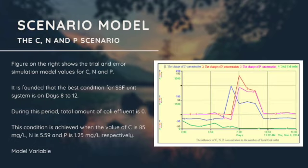It is found that the best condition for slow sand filter unit system is on day 8 to 12. During this period, total amount of coli effluent is zero and this condition is achieved when the value of C is 85 mg/L, nitrogen is 5.59 mg/L, and P is 1.25 mg/L respectively, and this model is variable.